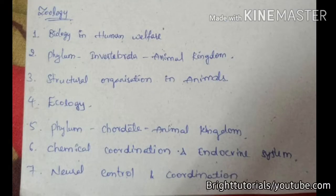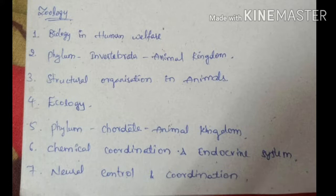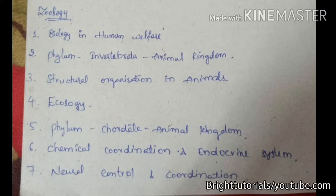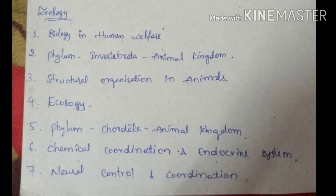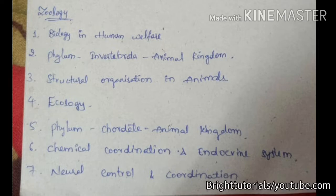Now let's start with the zoology subject. In zoology you should go through the chapters: biology in human welfare, phylum invertebrata animal kingdom, structural organization in animals, ecology, phylum chordata animal kingdom, chemical coordination and endocrine system, and lastly neural control and coordination.